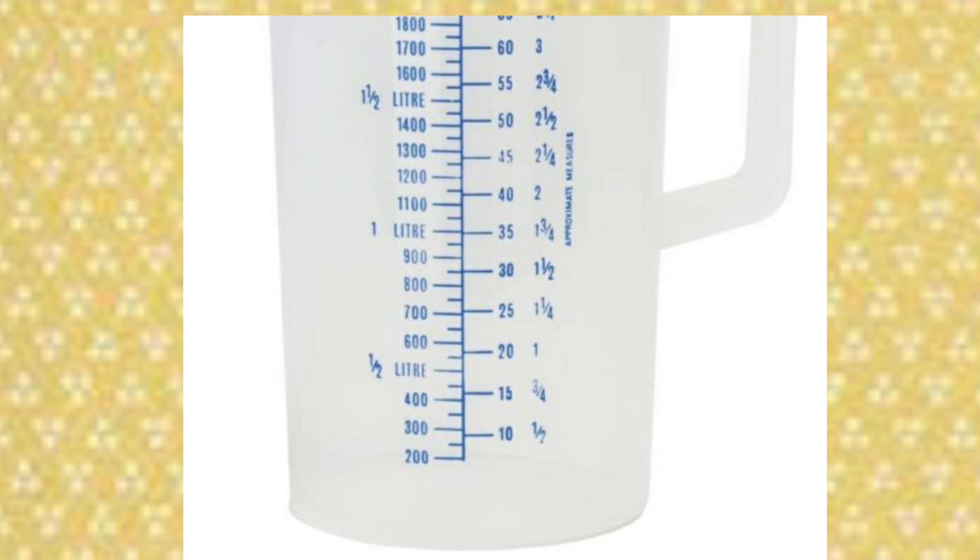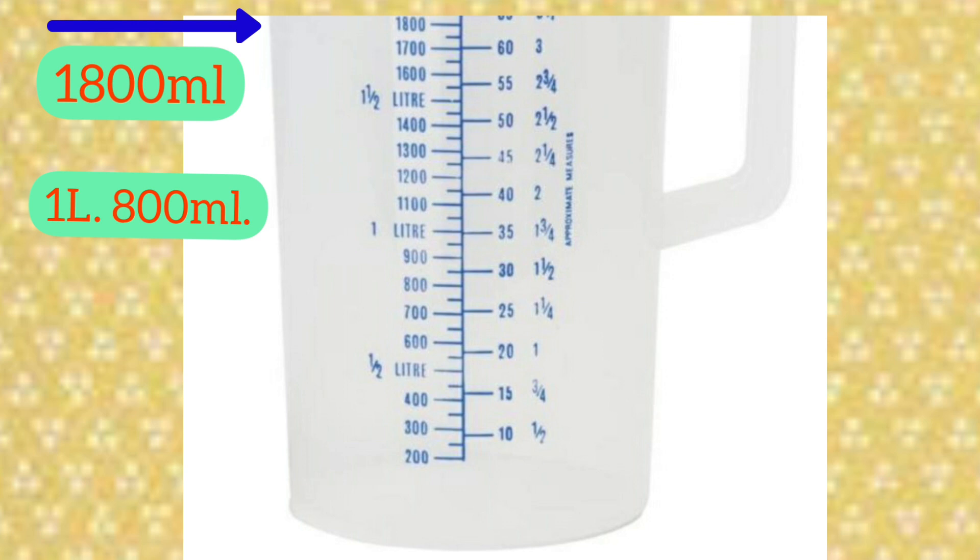See students, we are having a measurer which is empty. And what is its capacity? It's 1800 milliliters. We can also call it 1 liter, 800 milliliters. Now, we'll fill the various liquids in it and we'll measure them and we'll also learn to write them in liters. Come, let's fill a liquid in it and find its capacity.